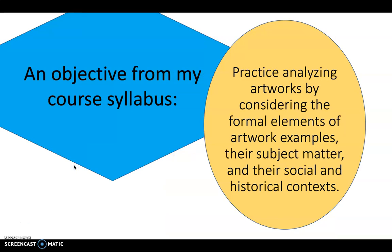The way I go about this idea of backwards course design is I start with an objective from my syllabus. Here's an objective from my syllabus: I want students to practice analyzing artworks by considering the formal elements of artwork examples, their subject matter, and their social and historical contexts. That's one of the three or four big objectives for the whole class.